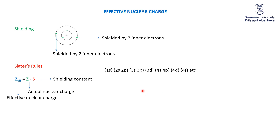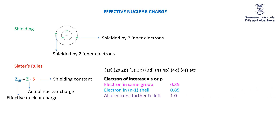Once you've written out the configuration in that order, pick the electron you're interested in. If that electron is an S or P electron, Slater calculates the shielding using these rules: an electron in the same group has a shielding effect of 0.35. Electrons in the N−1 shell shield more, at 0.85 — not a full electron, because sometimes that electron will be a little further out than yours since they're in orbitals, not orbits. But for electrons two or more shells closer to the nucleus — the N−2 shell and beyond — the Slater approximation is that those completely shield the electron of interest, contributing 1.00 each.